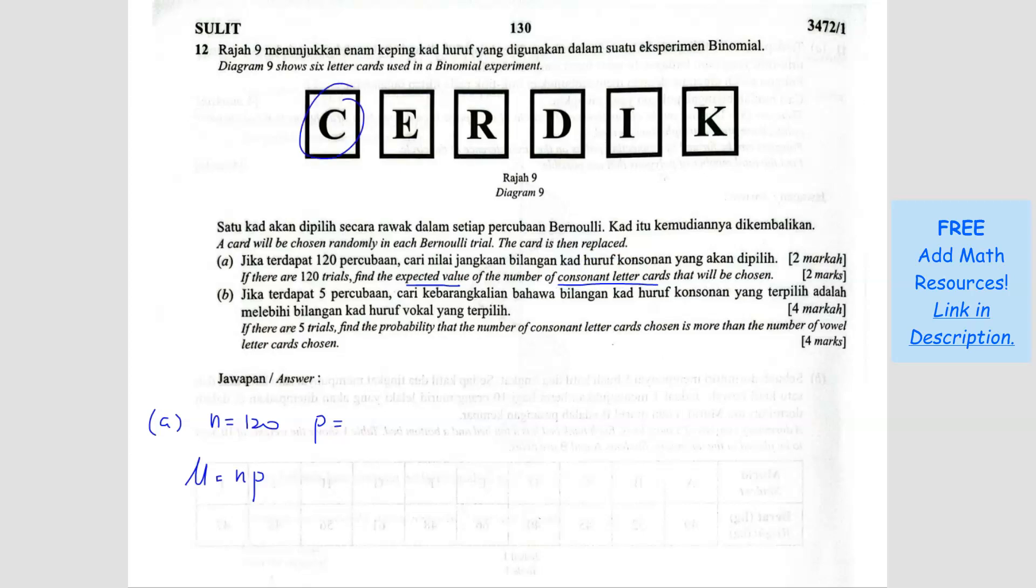So it's 4 letters, 4 cards here. 1, 2, 3, 4 out of 6 cards. So the probability will be 4 over 6, or it becomes 2 over 3. So N times P, it's 120 times 2 over 3. So you get 40 times 2 is 80.